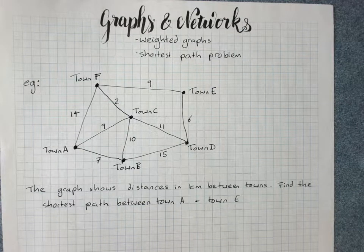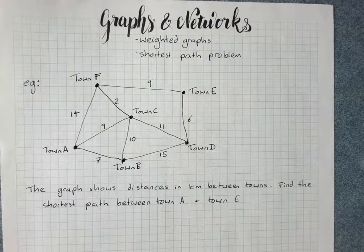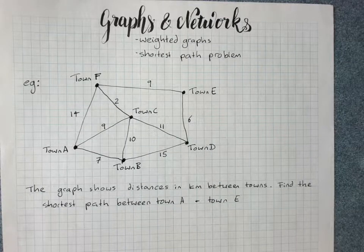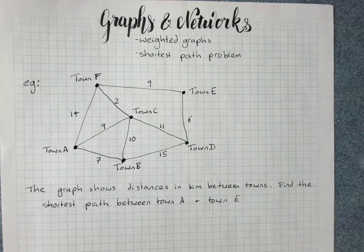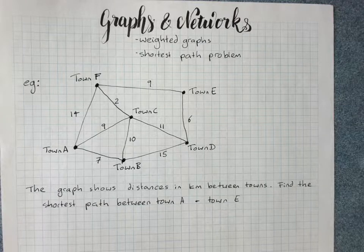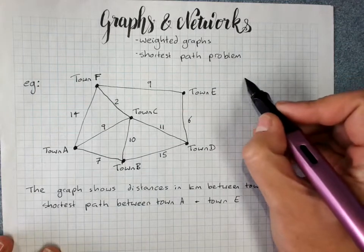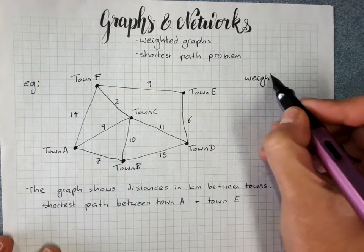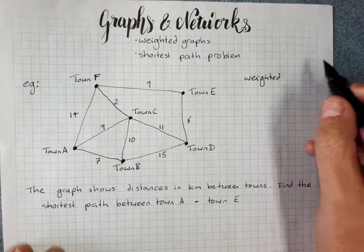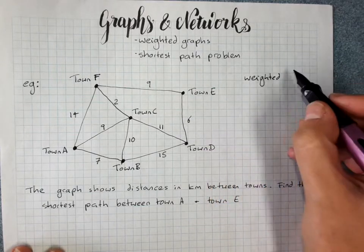Graphs and networks: weighted graphs and shortest path problems. A weighted graph is a graph with a number associated with each edge. Sometimes it's a distance, sometimes it's a cost, but those numbers are always called weights.